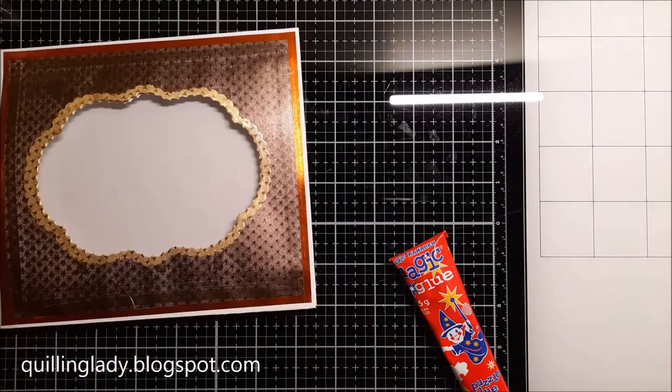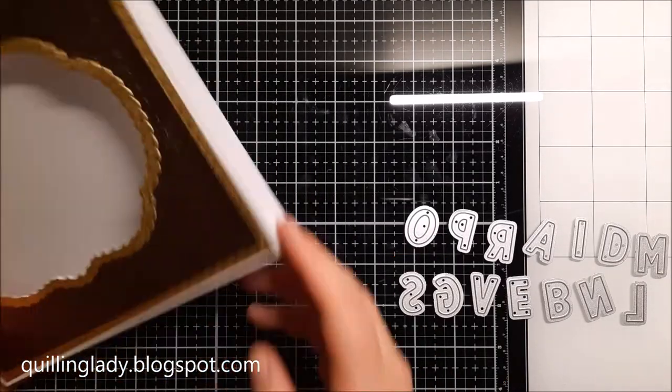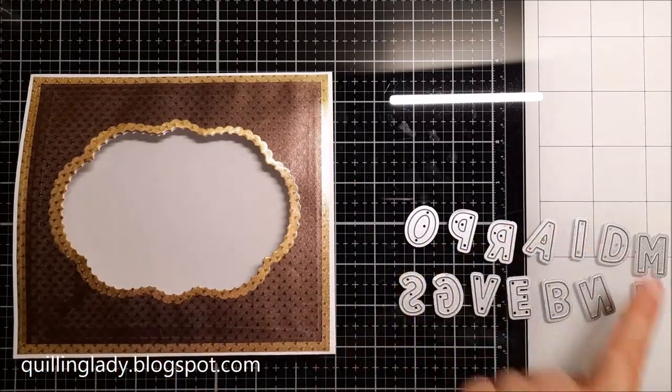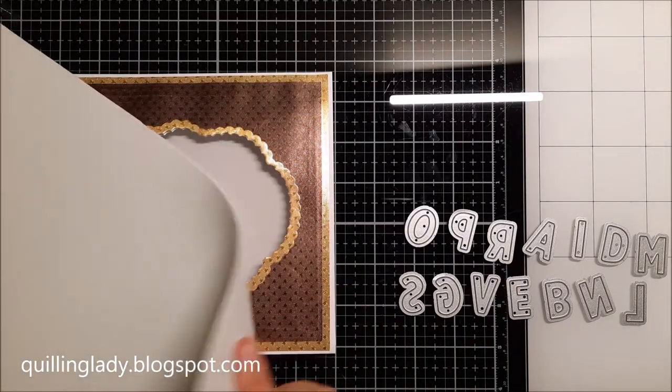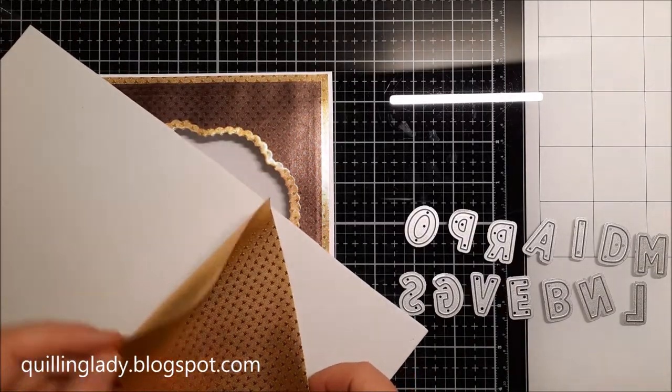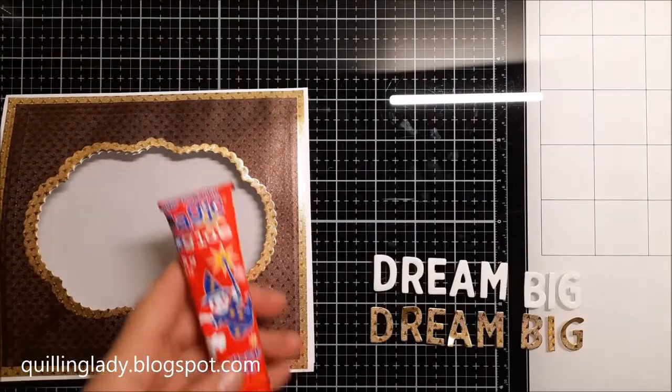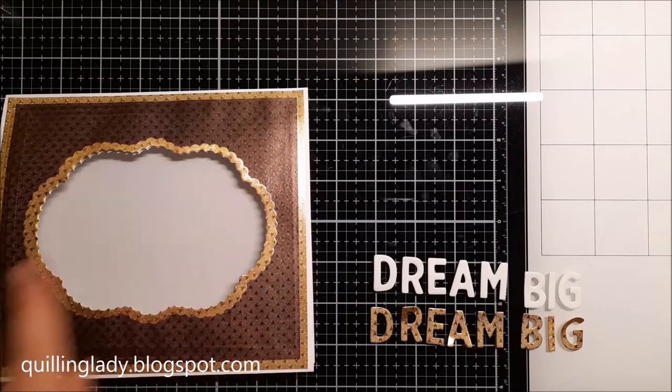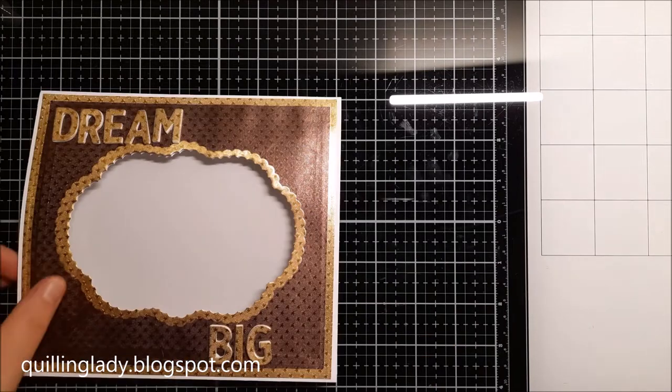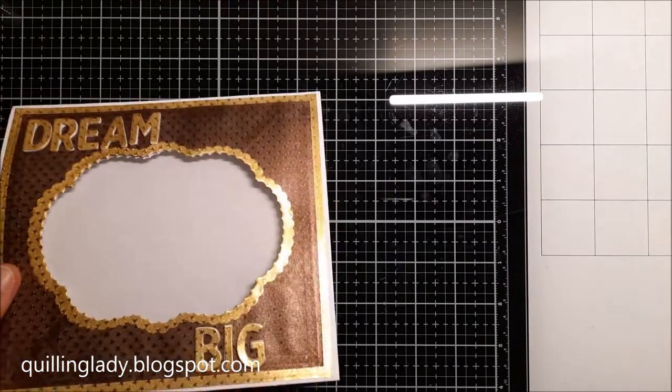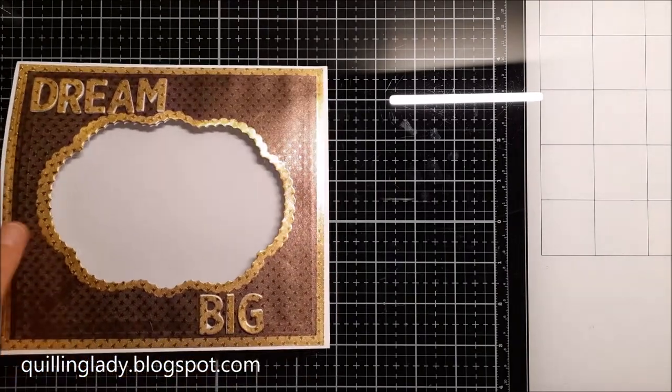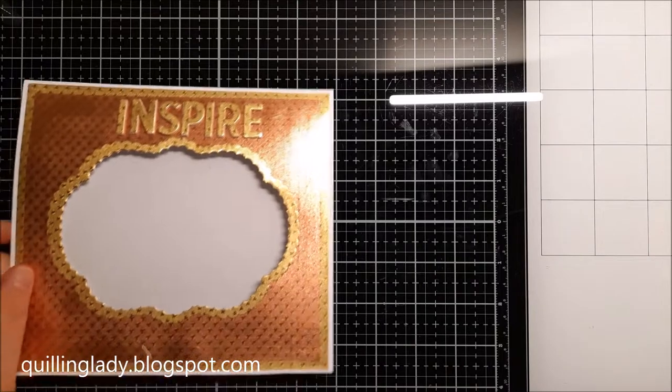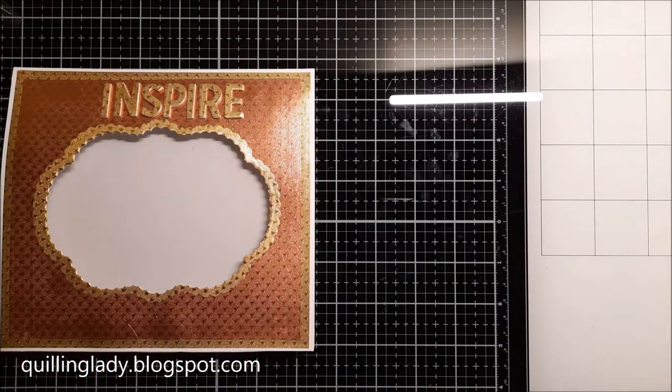Now using an alphabet cutting die set from my stash I'm going to die cut it once from white foam and also from gold starstruck foil paper, and this way I create the words and the sentiments for my projects. The first one I decided to have dream big because I really like it and then it's so inspiring for everything we do, right? Because if we don't dream then what will happen? Nothing. But when we dream and we actually aspire to do something then magic things can happen.